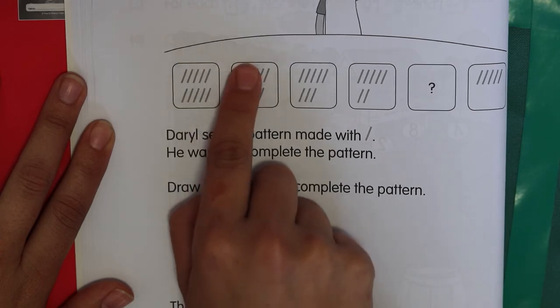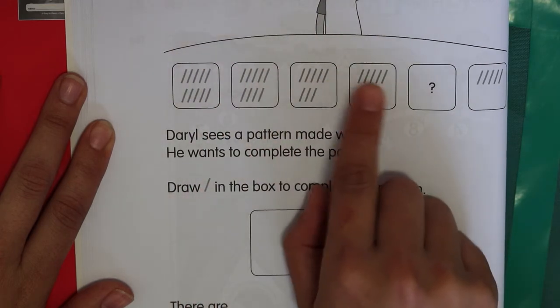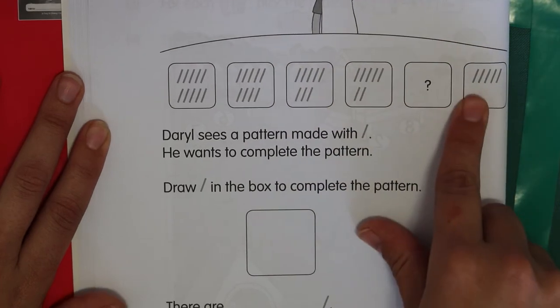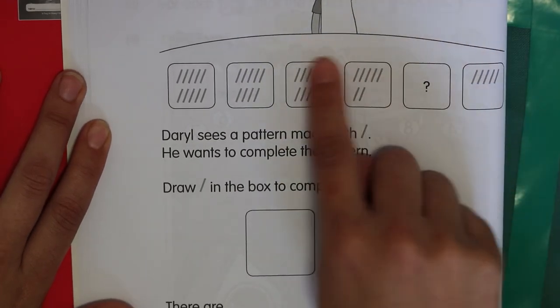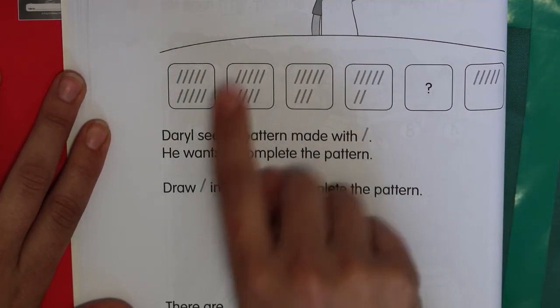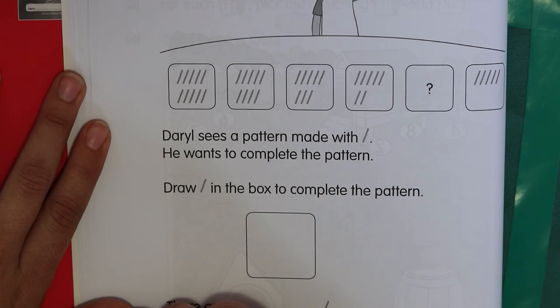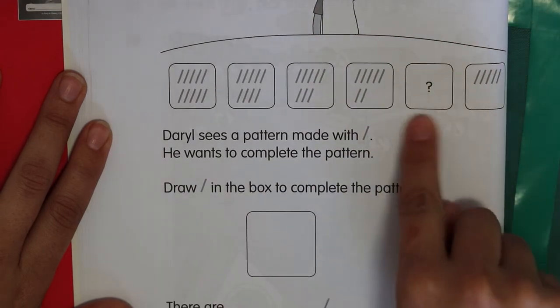So what you could do to help you is count how many are here. Write the number at the top. Do the same with this one, same with this one, same with this one, even the same with the last one. Write the number at the top. And then you'll see a pattern. You'll see if it's getting bigger or if it's getting smaller. If they're minusing one every time or adding two or what the pattern is. And then you'll know how many are supposed to be.